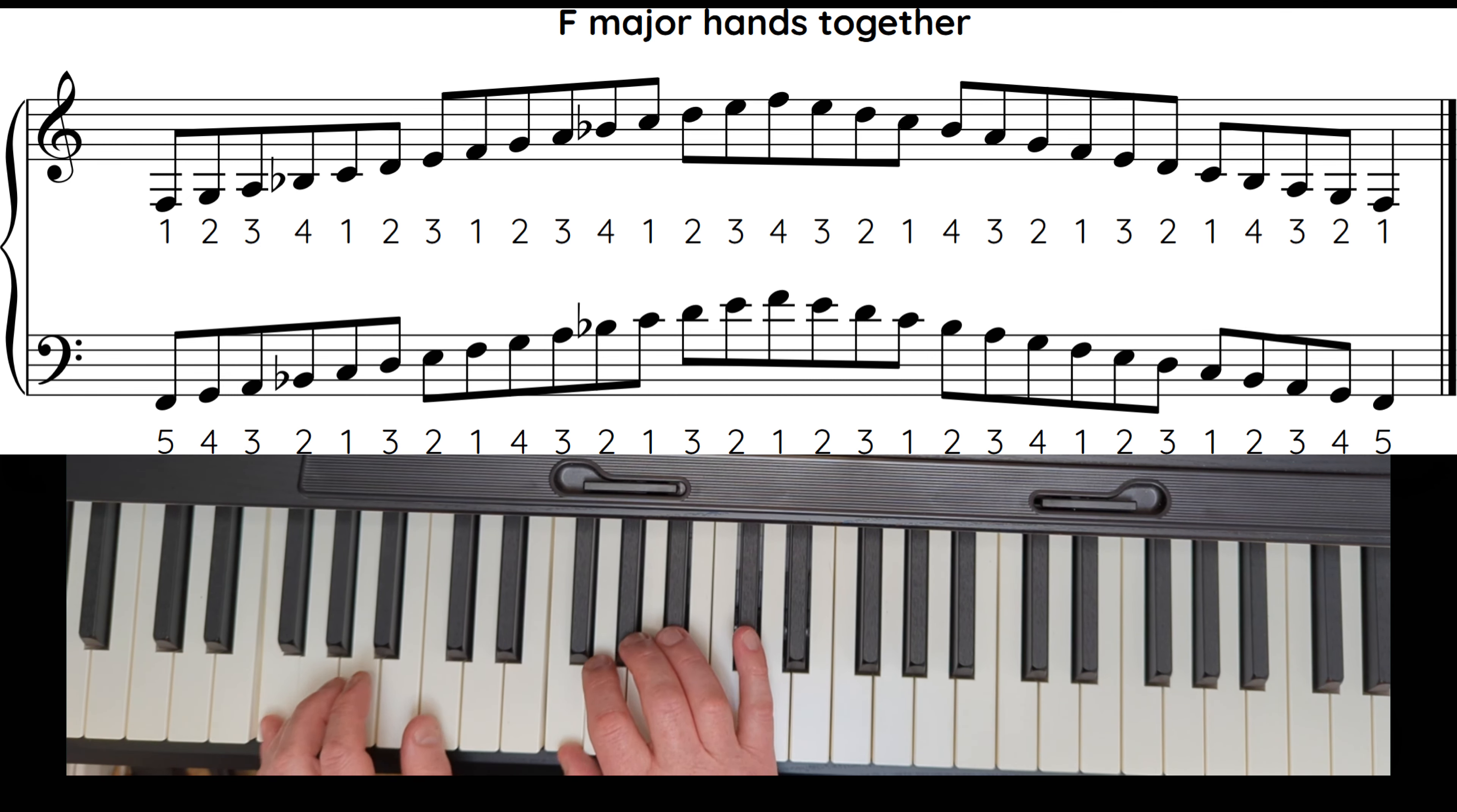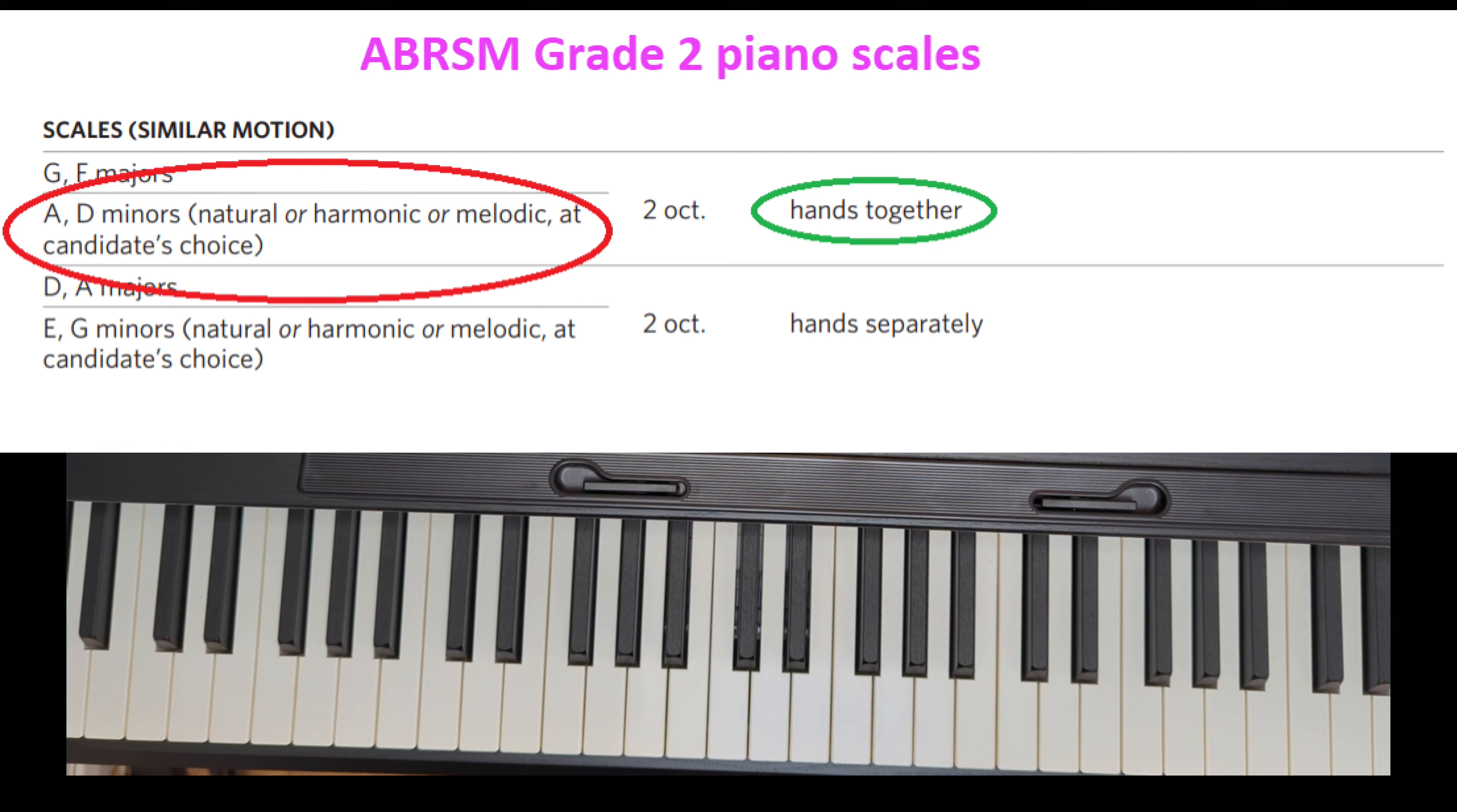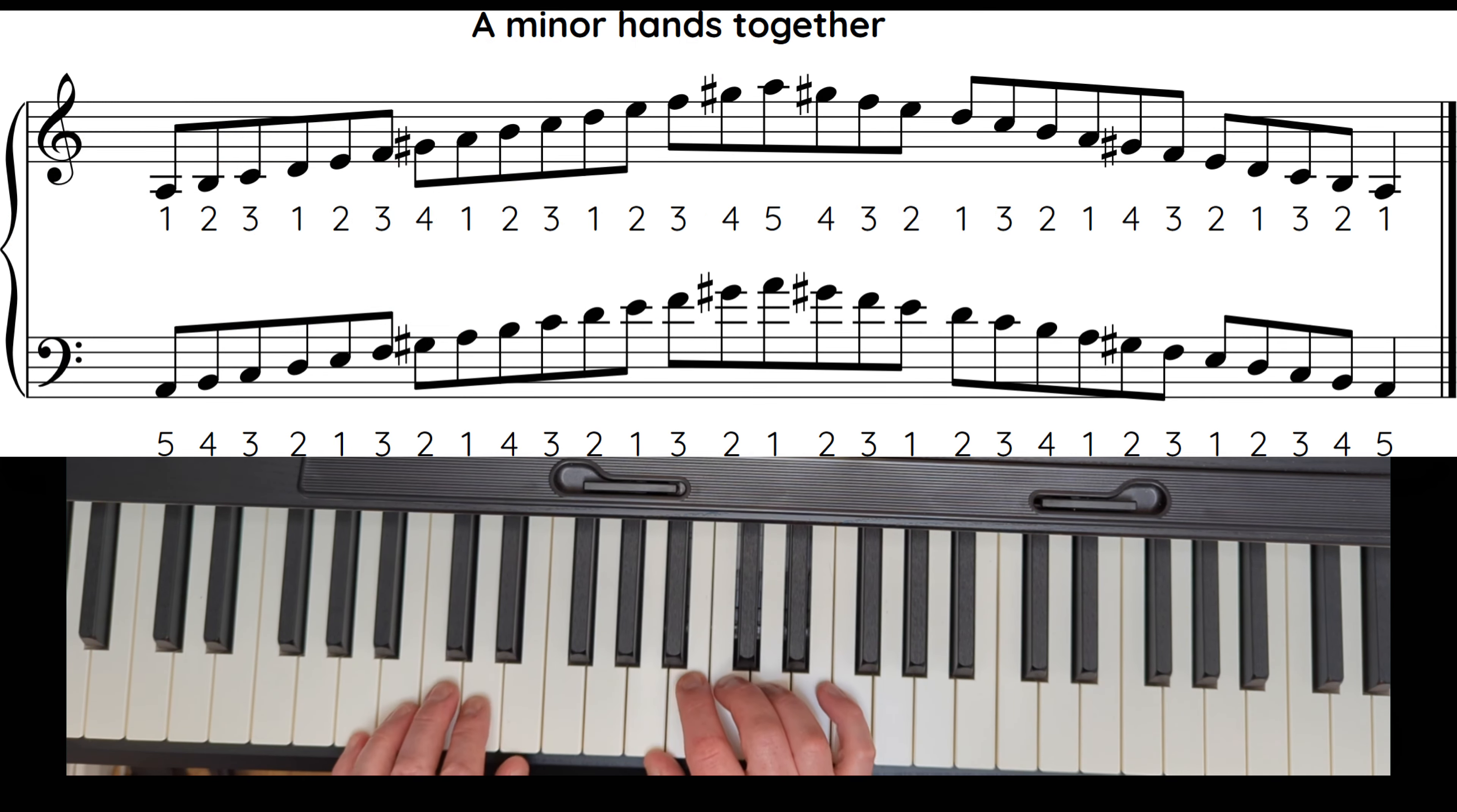Then we have two minor scales hands together: A minor and D minor. If you watched my first video, you know there are three variations available for the minors: natural, harmonic, or melodic. I'm going to show you the harmonic one right now, and then at the end of this video I'm going to show you the melodic and the natural. But here's the harmonic A minor, regular fingering, let's just go for it.